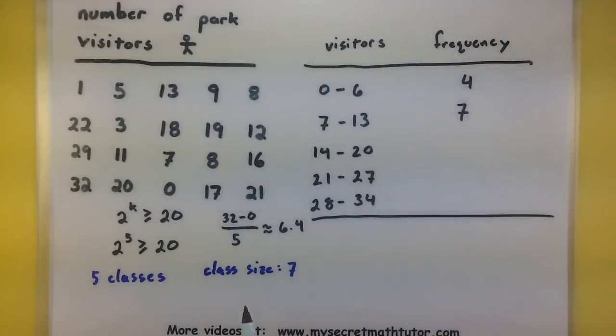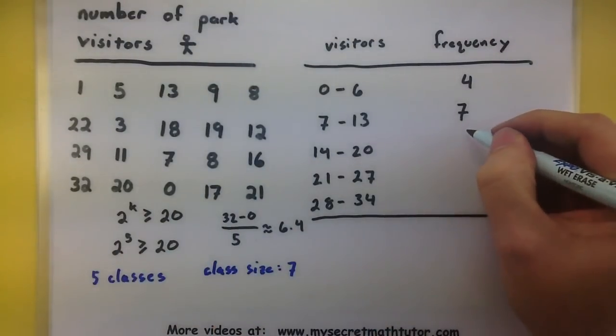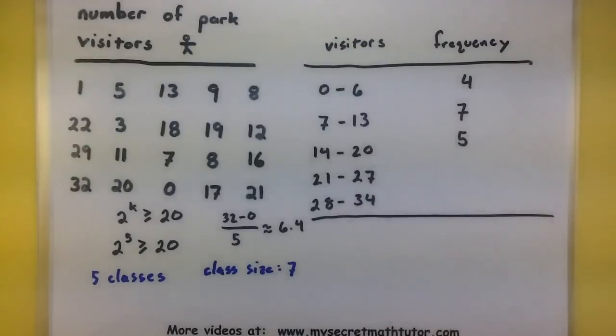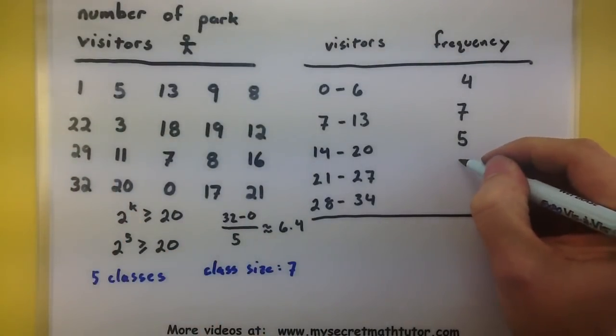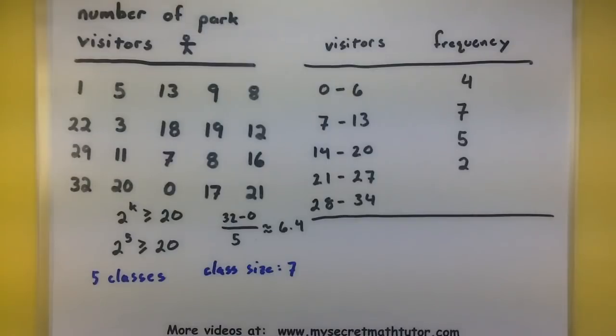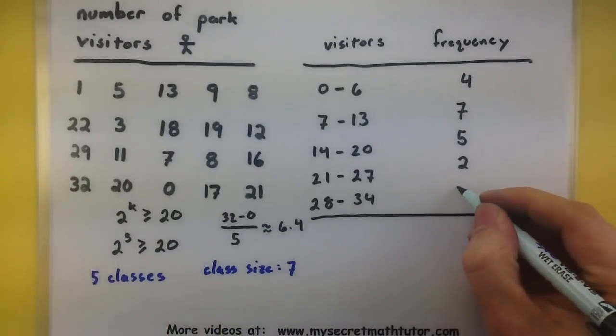Now 14 to 20, let's see, 18, 19, looks like I got 5 of them. Now 21 to 27, I don't think there's very many of those. I have a 22 and a 21, so just 2. And last, my 28 to 34, looks like just a couple of those, so 2.